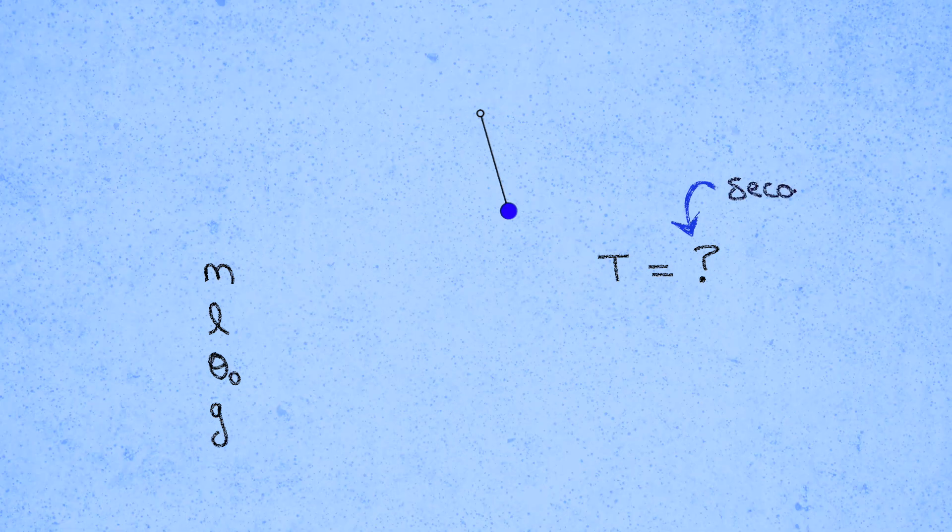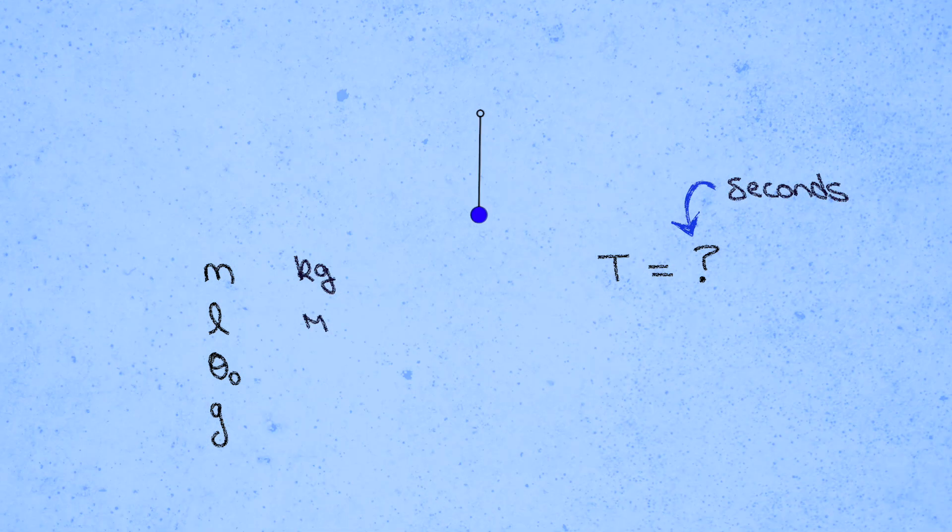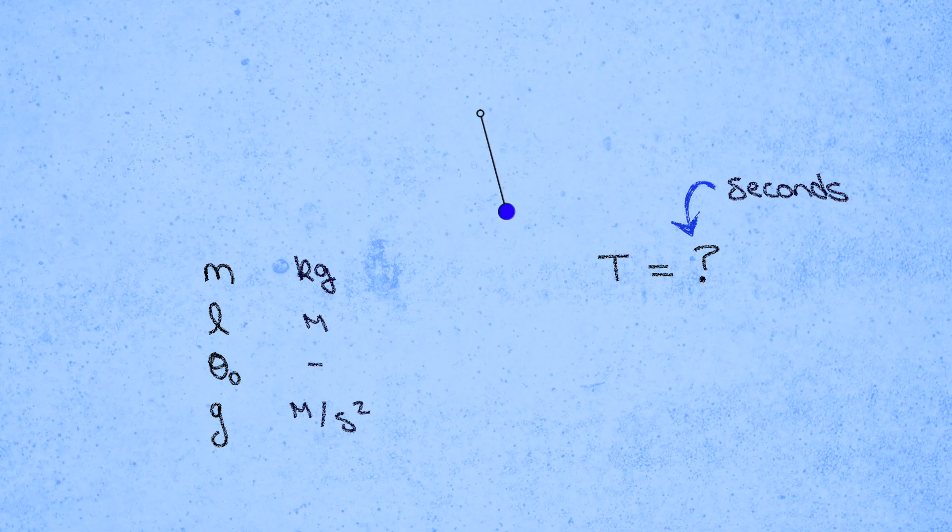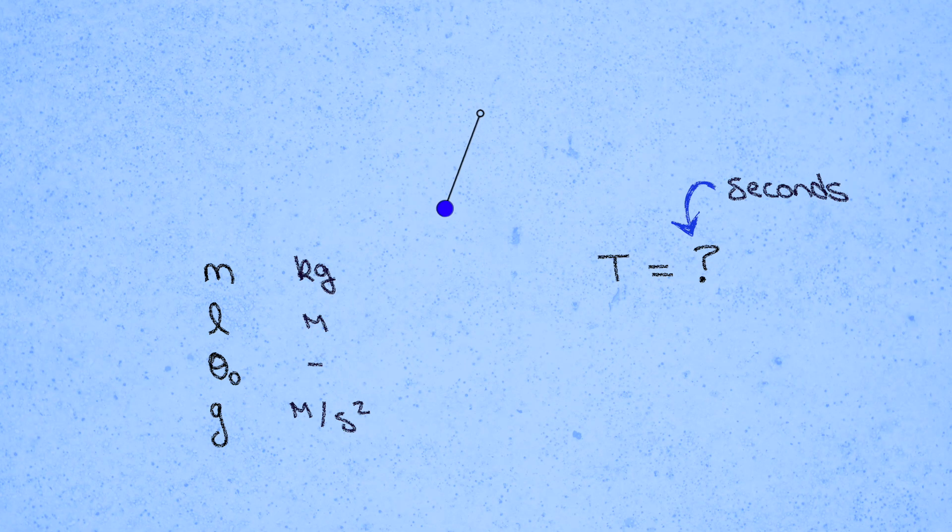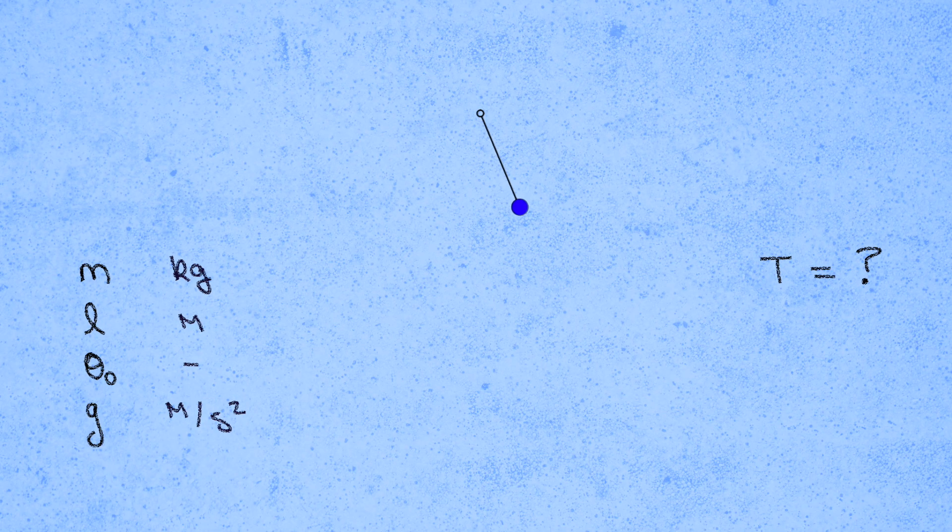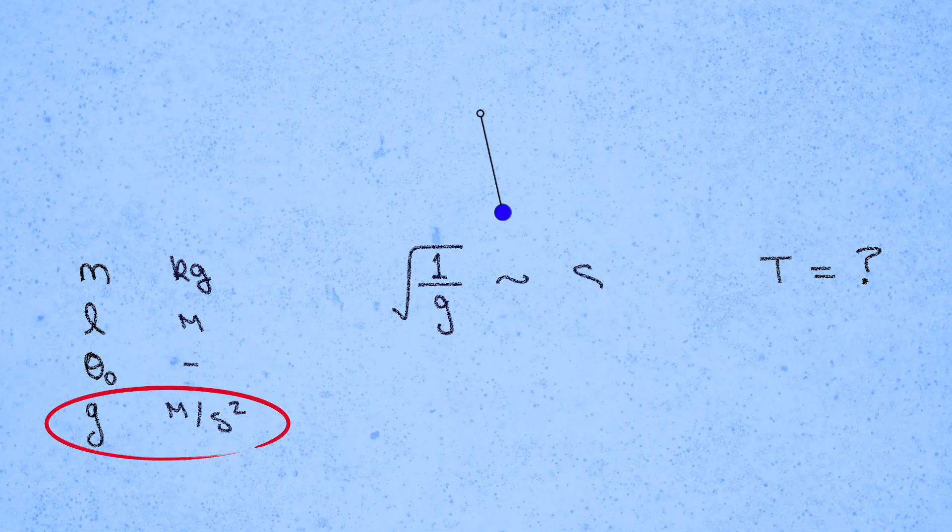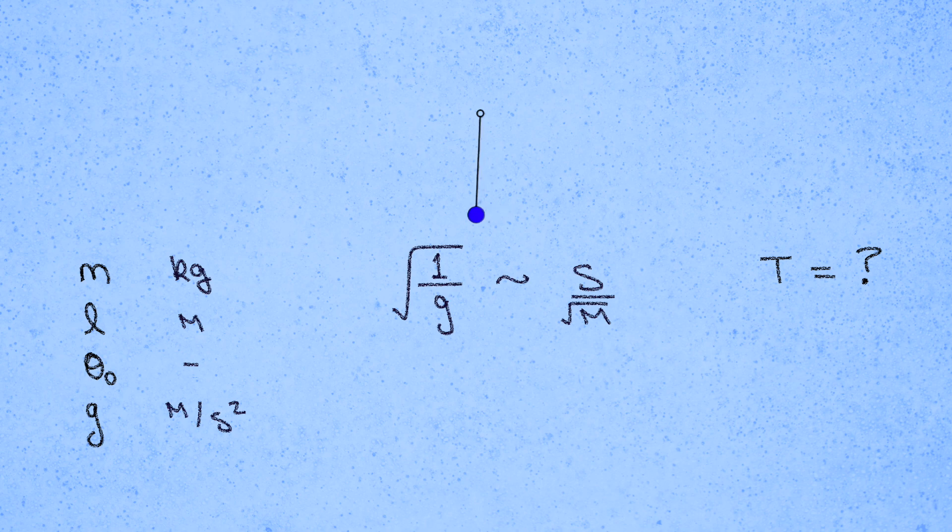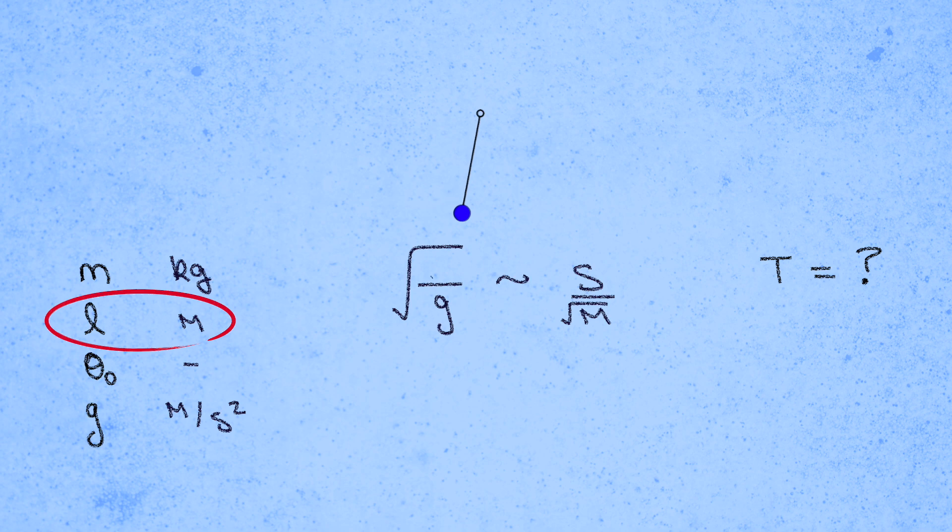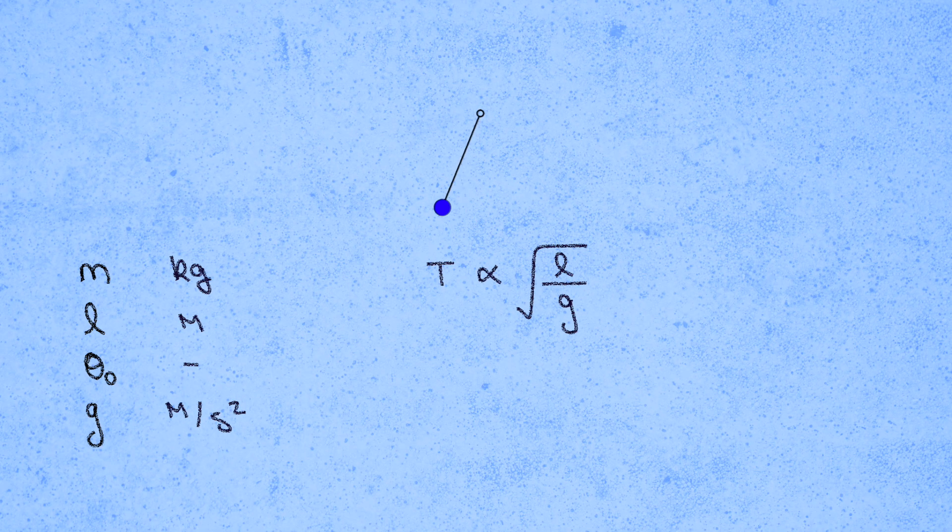What could you say then about the period of the pendulum? Well, the period has units of seconds, and the parameters we have at our disposal are the mass m in kilograms, the length L in meters, the initial angle theta0, which is unitless, and little g in meters per second squared. We want to figure out how we can combine these quantities to get something with units of seconds. The only place that seconds show up here are in the units of little g. If we flip it over and take the square root, in order to put the seconds on top, we'll get seconds per square root meter. Now we need to get rid of that factor of square root meter in the denominator, so we should multiply this by the square root of L. That gets us seconds, and so the period of the pendulum must be proportional to the square root of L over G.